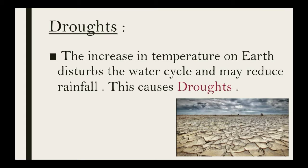Drought is also one of the consequences of deforestation. It occurs because of the increase in temperature on earth, which disrupts the water cycle and causes less rainfall, and this may cause droughts.